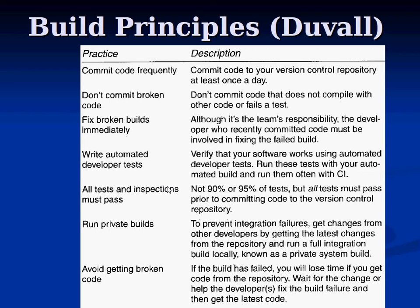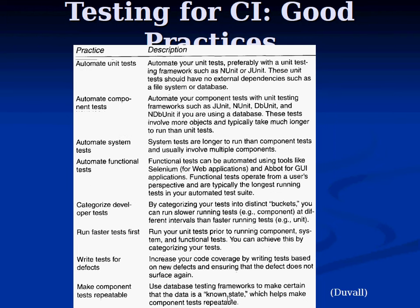Tests and inspections have to pass. Run private builds locally — don't just do manual compilation, run tests in an automated fashion. And avoid getting broken code: if the build has failed, don't refresh from it. Wait until it's fixed, because if you refresh from a broken build you might not be able to test your own code.